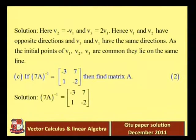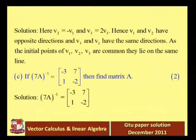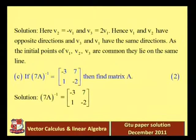Question 1c (two marks): Given that the inverse of 7A equals the 2×2 matrix [−3, 7; 1, −2], find matrix A. To solve this, we take the inverse of both sides. The inverse of (7A)⁻¹ gives us 7A, and dividing by 7 gives A.